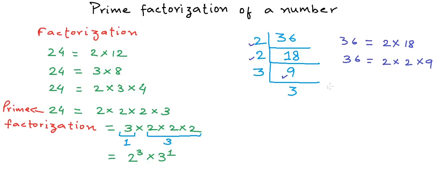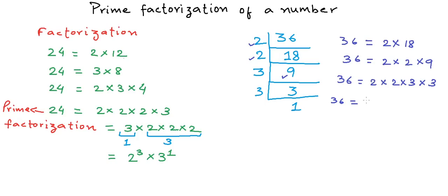The quotient would be 3. Now the smallest number that can divide 3 would be 3 again, and we get 1 in the quotient.